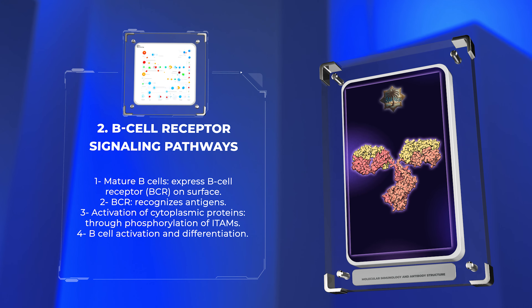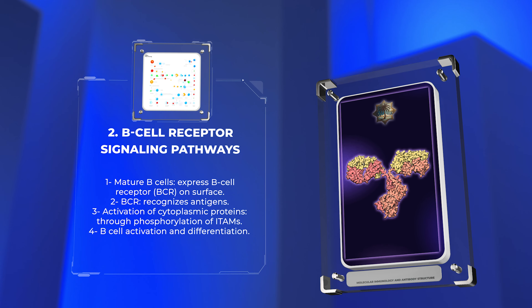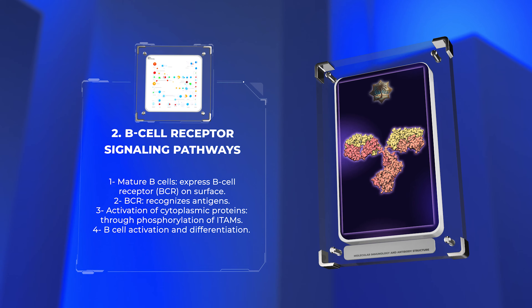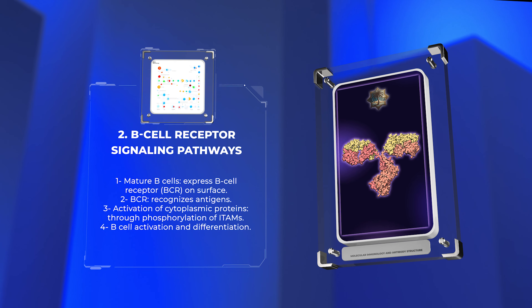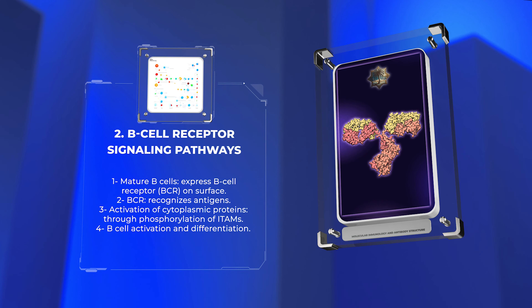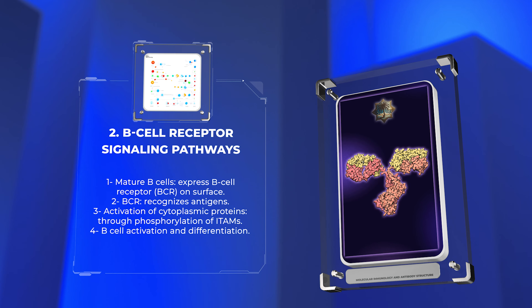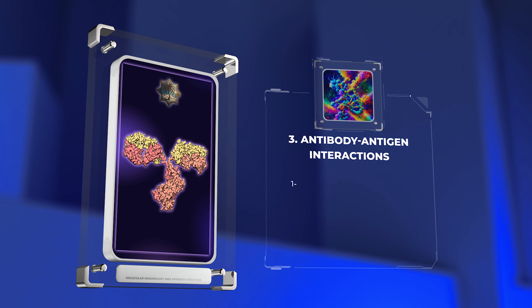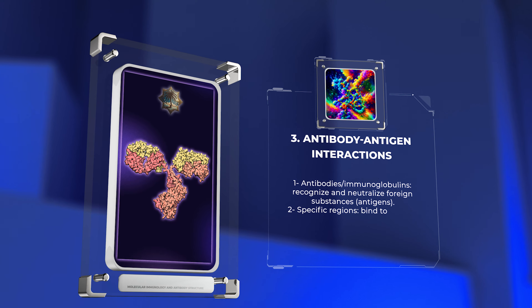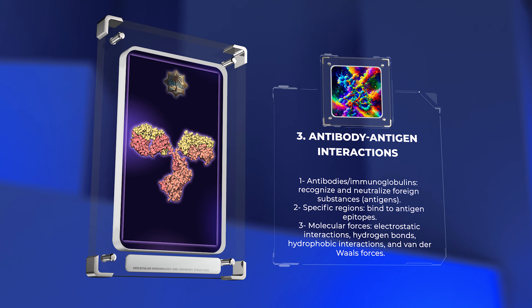After immunoglobulin gene rearrangement, mature B cells express a B cell receptor (BCR) on their surface. The BCR recognizes antigens and activates cytoplasmic proteins such as kinases and transcription factors through phosphorylation, leading to B cell activation and differentiation.